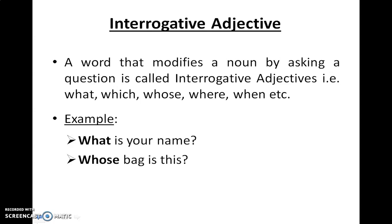Interrogative adjective — it is very simple. Interrogative adjectives are question words. A word that modifies a noun by asking a question is called an interrogative adjective. These include: what, which, whose, where, when, etc. For example: 'What is your name?' and 'Whose bag is this?' Wherever question words appear, you can easily identify them as interrogative adjectives.